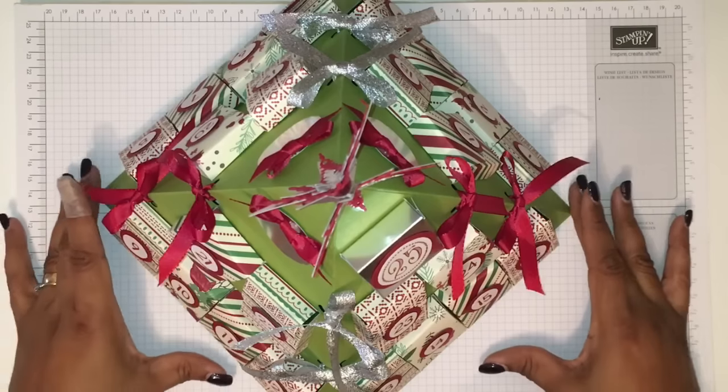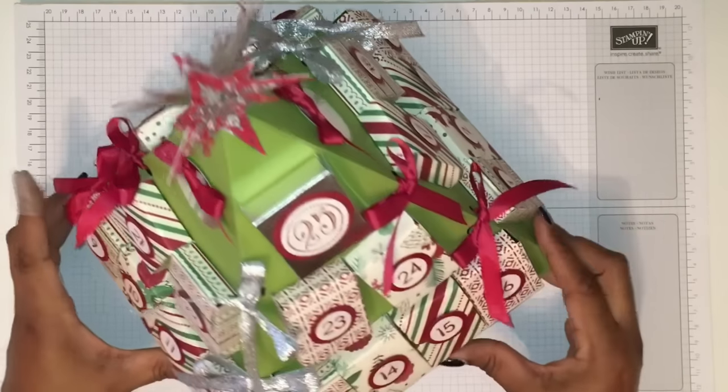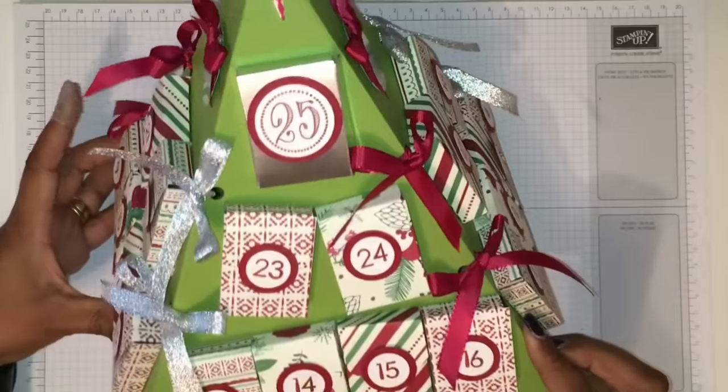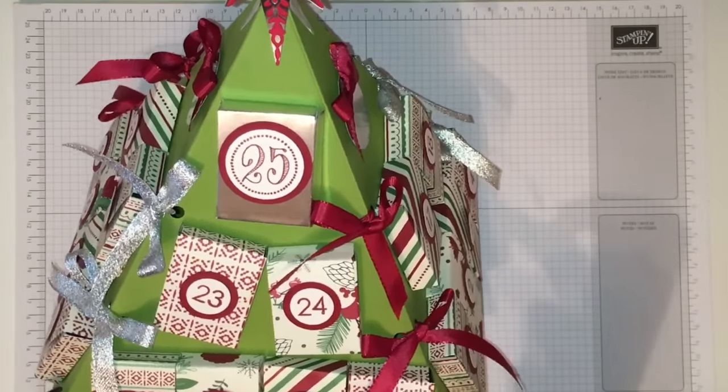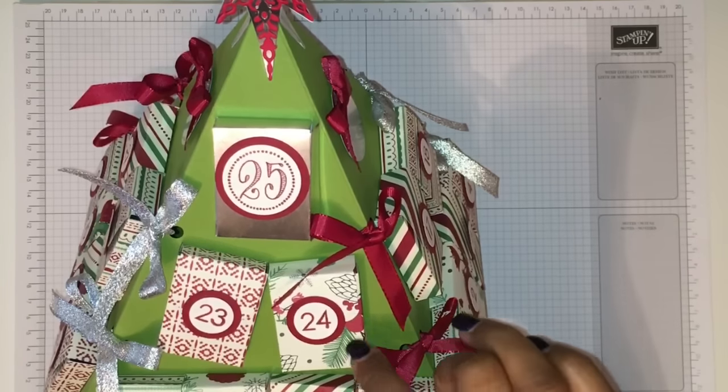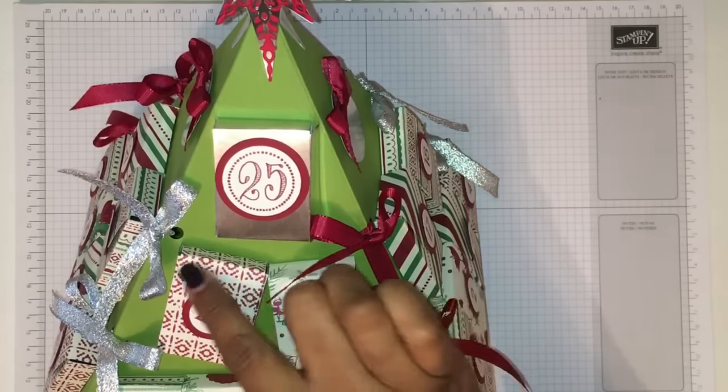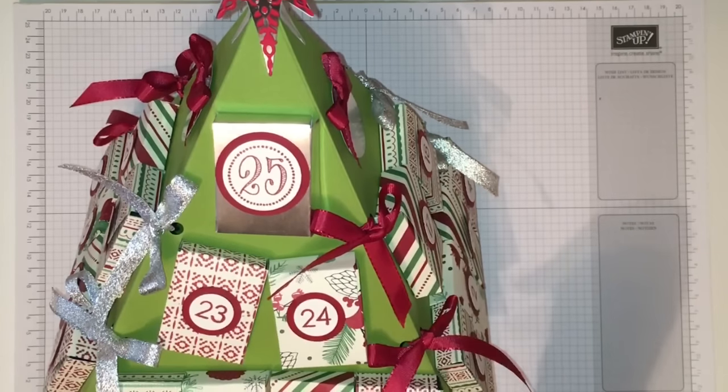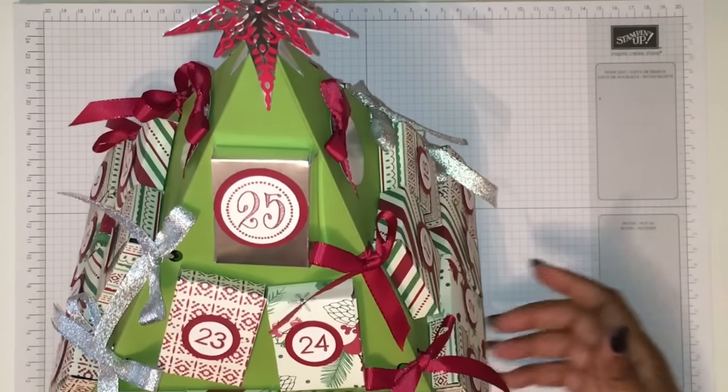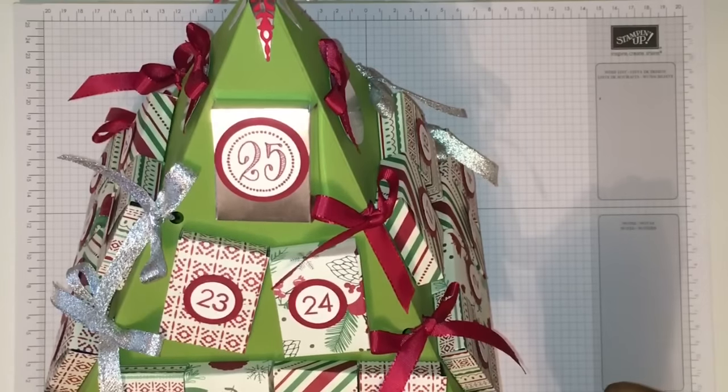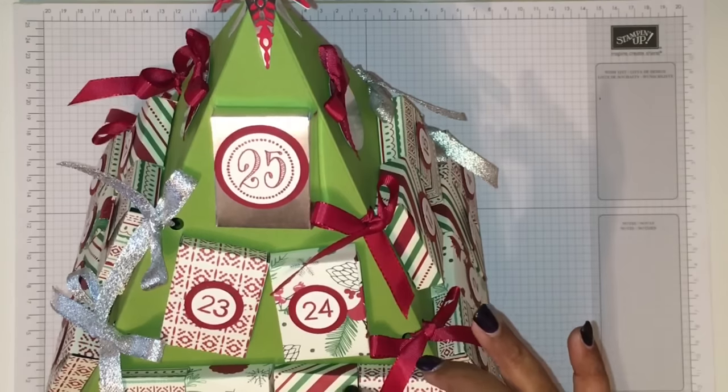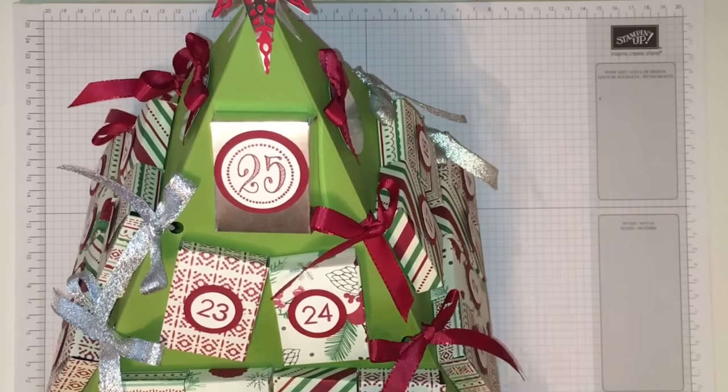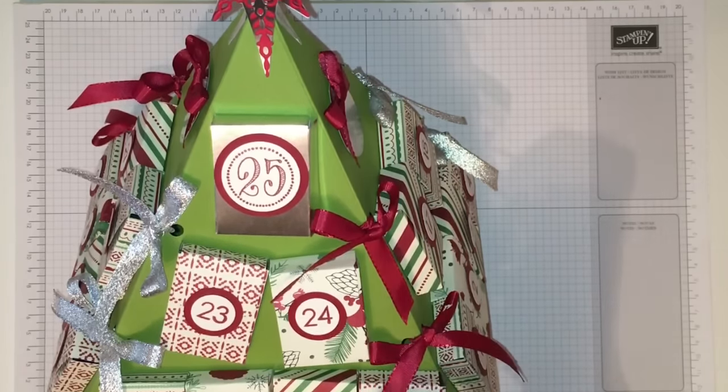So this is our tree and contains small chocolates inside. It's an advent calendar and the first part that we're gonna do today, I'm gonna work with you to make each of these boxes. This one I made in old olive and Christmas sweet, which has 12 different patterns as most of our designer series papers.